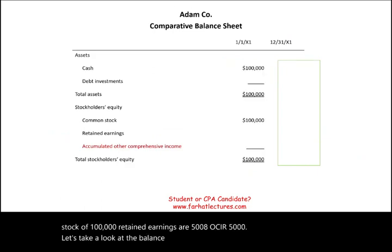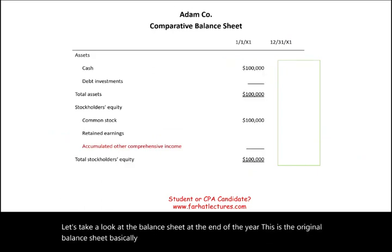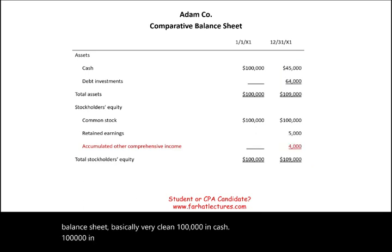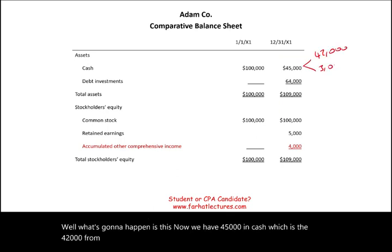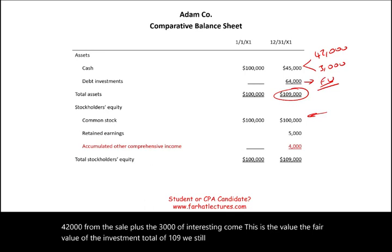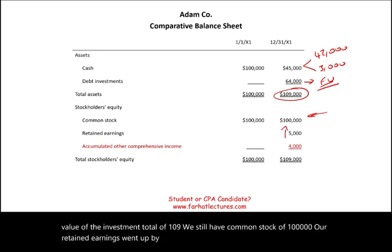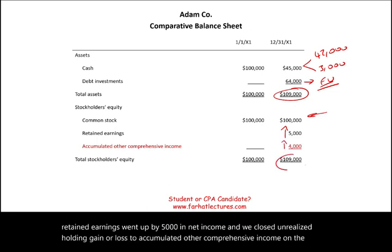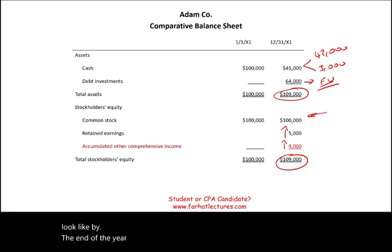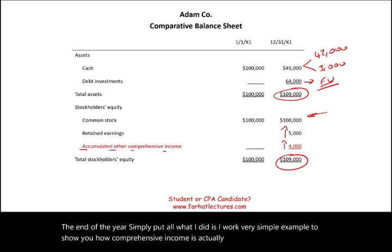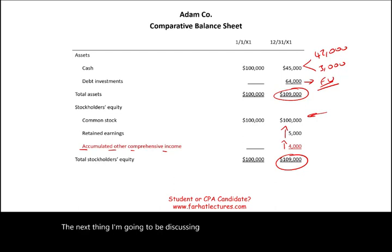Looking at the balance sheet at year end: we have $45,000 in cash — $42,000 from the sale plus $3,000 of interest income — plus the fair value of the investment, totaling $109,000. We still have common stock of $100,000, retained earnings up $5,000 from net income, and we closed unrealized holding gain or loss to accumulated other comprehensive income. The balance sheet balances at $109,000. This simple example shows how comprehensive income is closed to AOCI. Next, we look at multiple period adjustment.